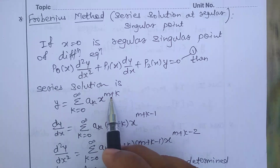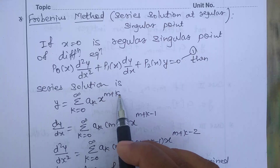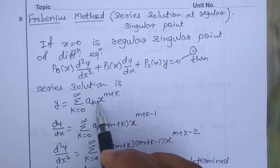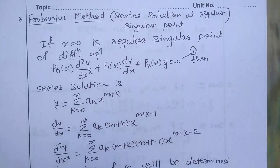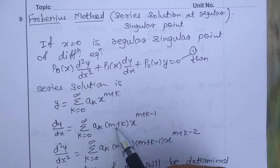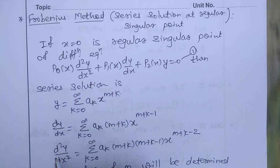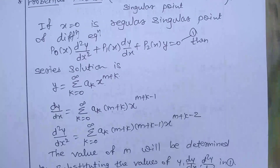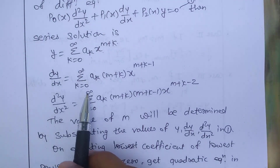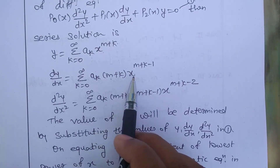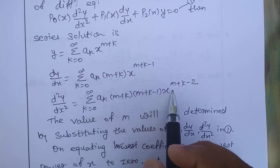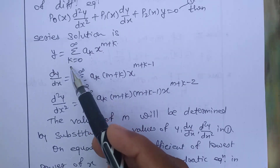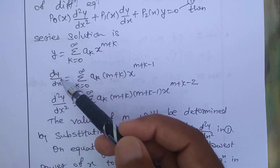Note the difference: at an ordinary point we take the solution as y = Σ aₖ xᵏ, but here since the point is a regular singular point we consider y = Σ aₖ x^(m+k). Differentiating: dy/dx = Σ aₖ (m+k) x^(m+k−1). Differentiating again: d²y/dx² = Σ aₖ (m+k)(m+k−1) x^(m+k−2).